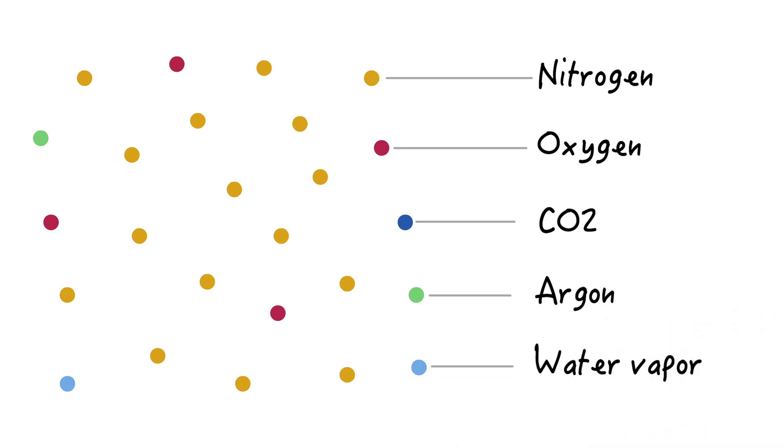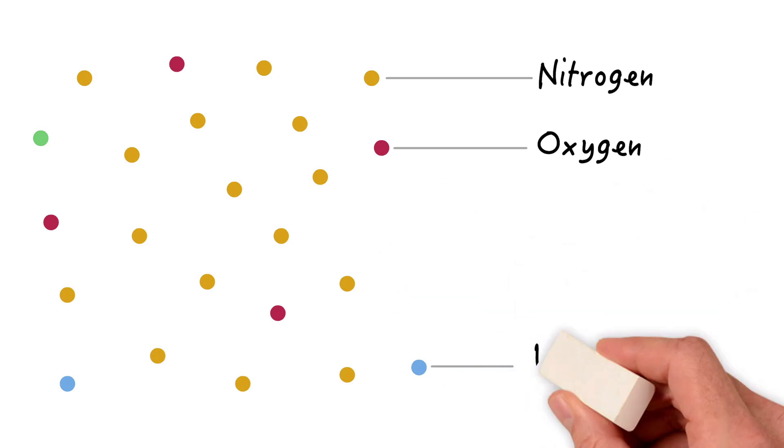The amounts of argon and carbon dioxide are minimal, as is the amount of water vapor under normal so-called dry conditions. Therefore, from a practical standpoint, atmospheric air can be considered a mixture of oxygen and nitrogen at approximately 21% and 79% respectively.